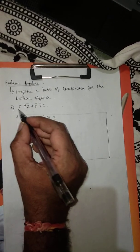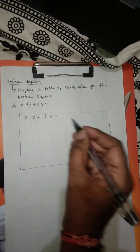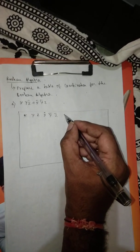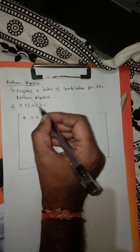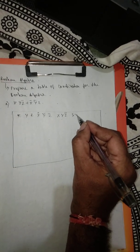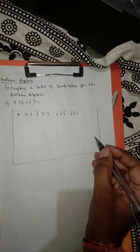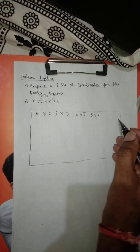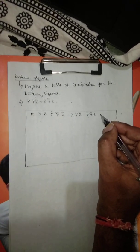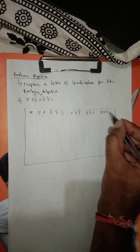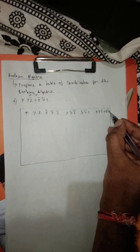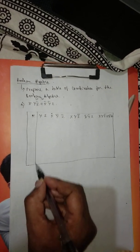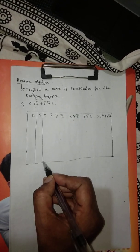The next thing you have to do is go from left to right. So I will say x, y, z bar. After that, I have to find out x bar, y bar, and z. In addition to that, I have to evaluate these two things, so the full expression is: x, y, z bar plus x bar, y bar, z.